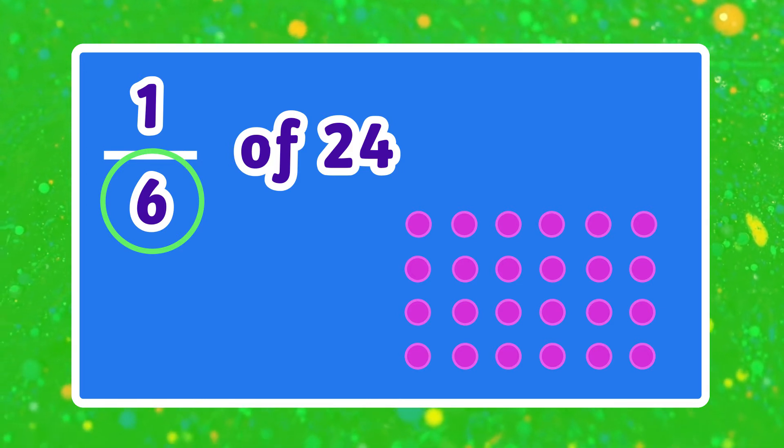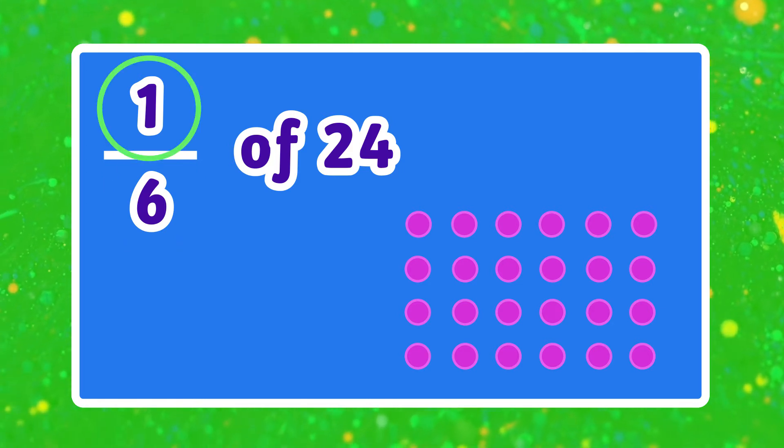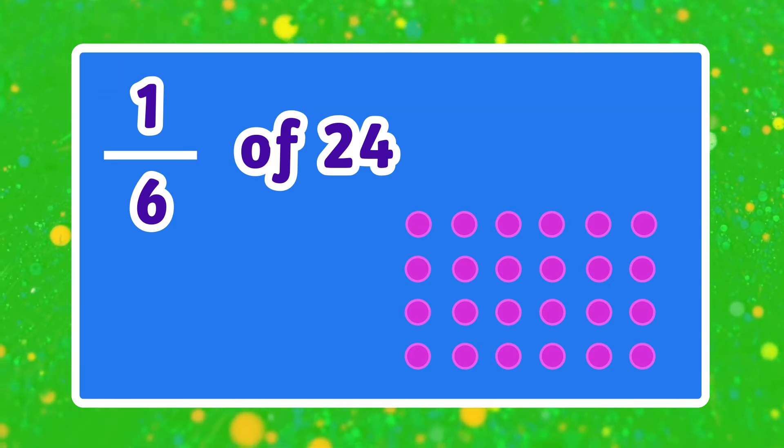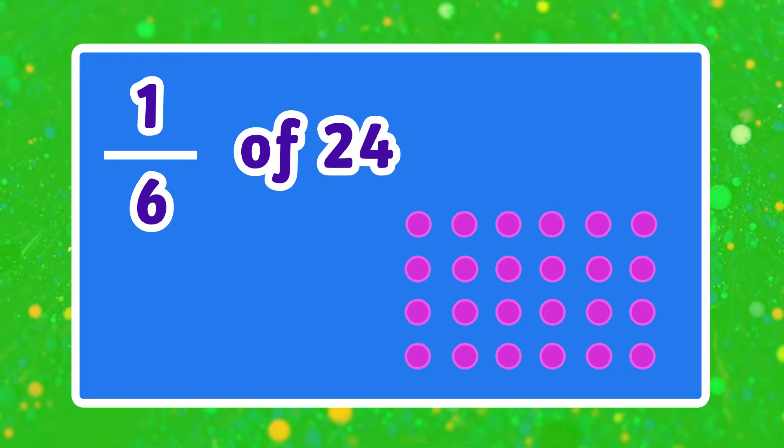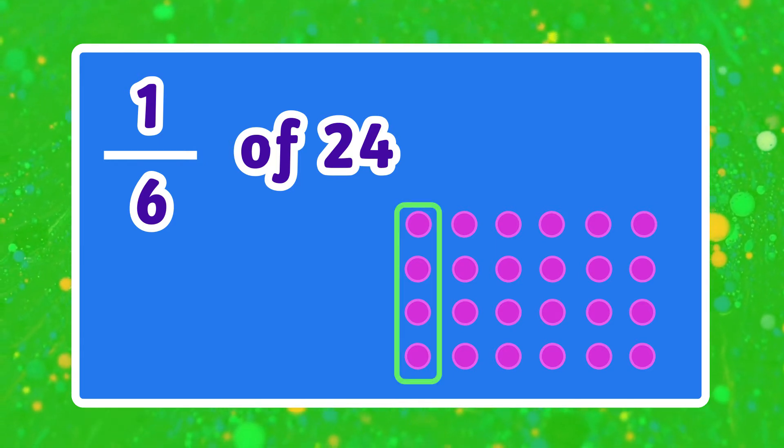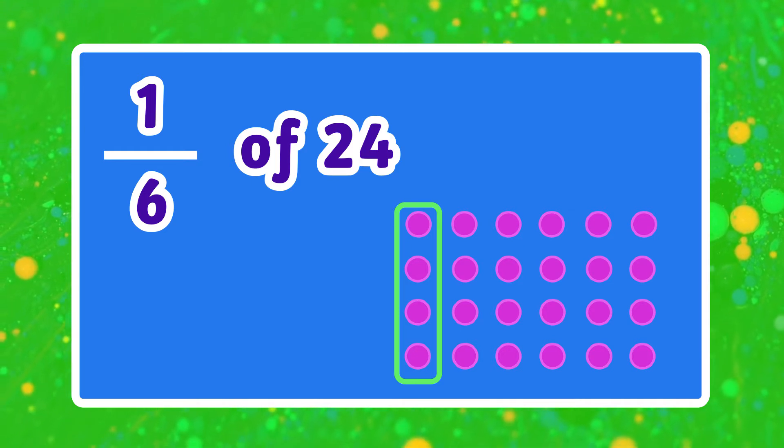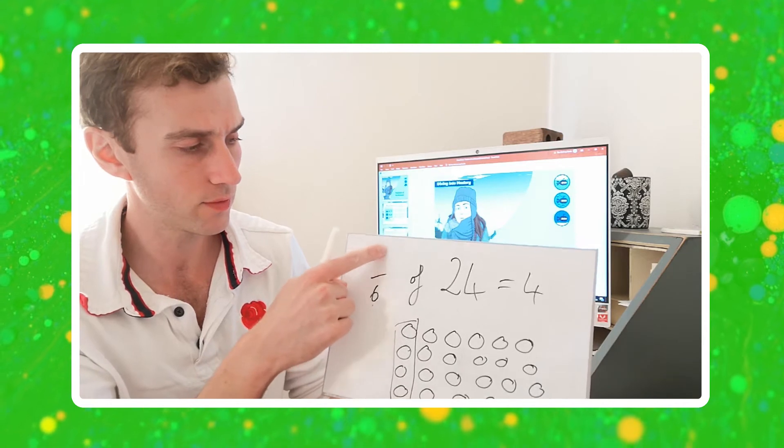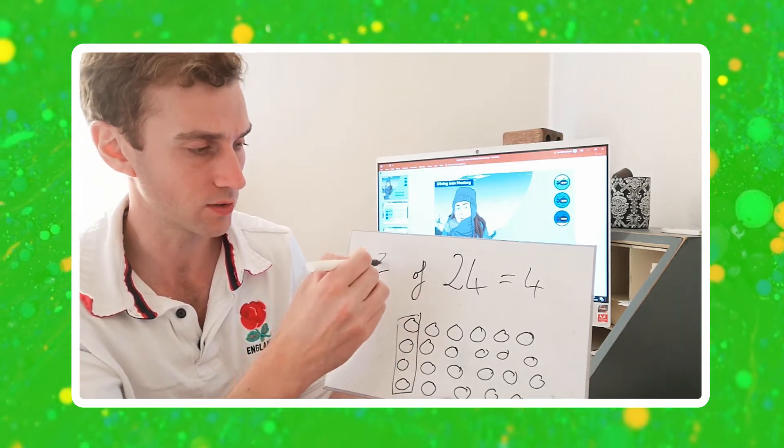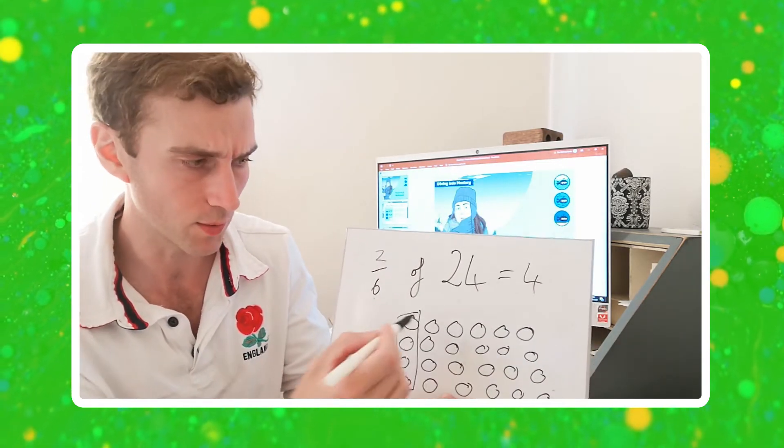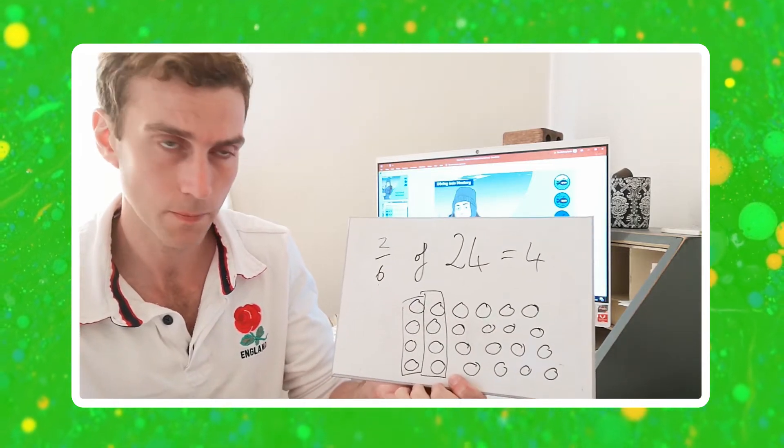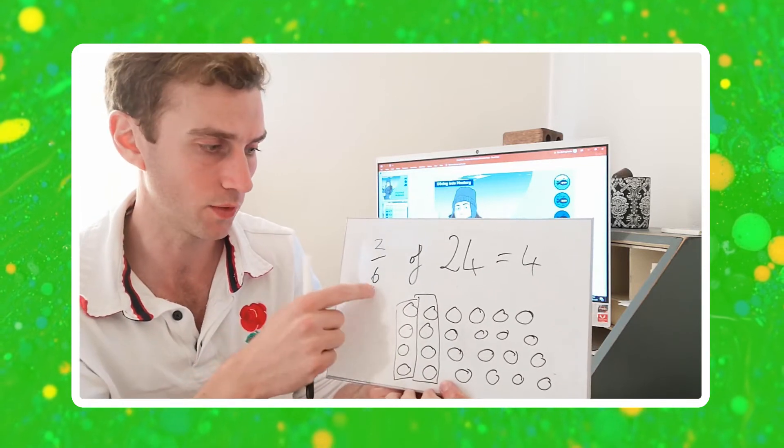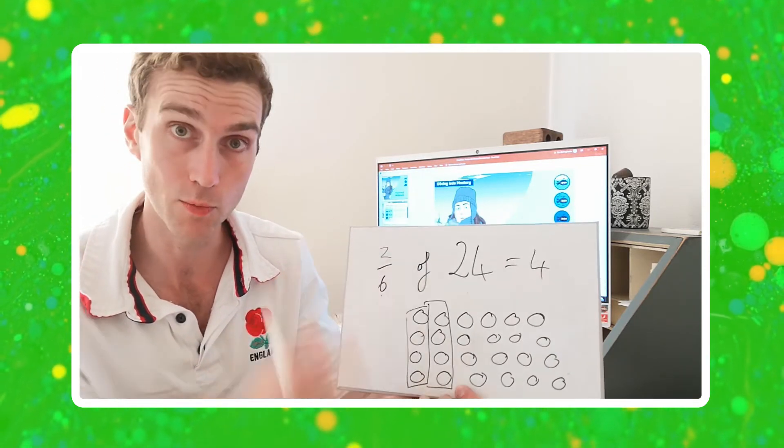The numerator tells me how many of those equal groups I count. So this is a unit fraction, there's a one at the top, I have to count one of my groups. Done. So 1 sixth of 24 equaled 4. If that becomes a non-unit fraction and goes to 2 sixths, then I would need to count two of my groups. You see? So by visually representing it, I hope that's a quick reminder of what the denominator tells you to do and what the numerator tells you to do.